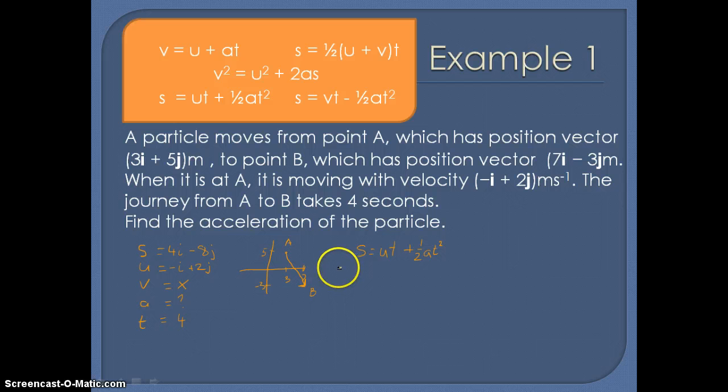So now we can substitute our values in. So we've got 4i minus 8j equals U, which is minus i plus 2j times by T. So it's a good idea to write this as a bracket. And half A times T squared where 4 squared is 16. So we're expanding the brackets here, which is minus 4i plus 8j. And half of 16 would be 8. So we've got 8A.